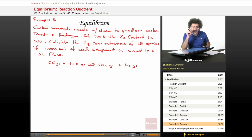So let's read this. Carbon monoxide reacts with steam to produce carbon dioxide and hydrogen. At 700 Kelvin, the equilibrium constant is 5.10. Calculate the equilibrium concentrations of all species if 1.0 mole of each of the components is mixed in a 1 liter flask. Now the first thing we need to do is, this is the procedure. We're going to write the equation, which we have. We're going to write the equilibrium expression, and then we're going to check the reaction quotient to see where the reaction is at that moment to see which direction is actually going to be moving in.